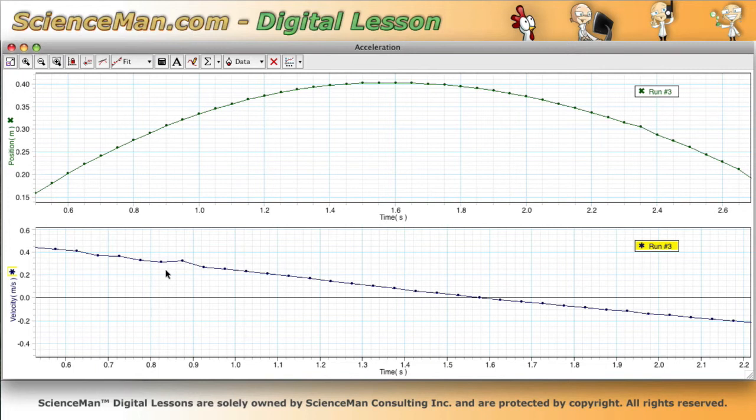And that indicates to us that the velocity is changing at a very regular rate. So we can probably refer to this as constant negative acceleration.